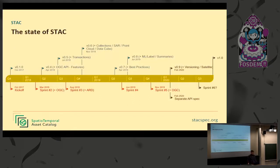The current state of STAC: we're at version 0.9, just released a few days ago, and we're heading towards the first stable release — version 1.0 — in the third or fourth quarter of this year. There are also plans to separate the specification work for the metadata and the API in the coming weeks so they're more streamlined towards their respective use cases.